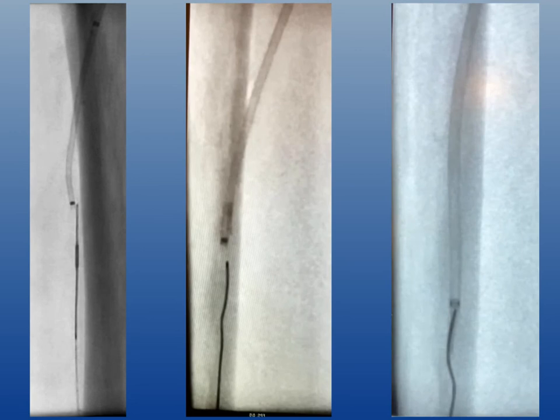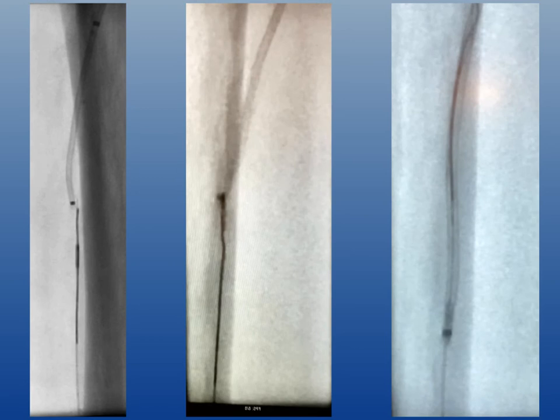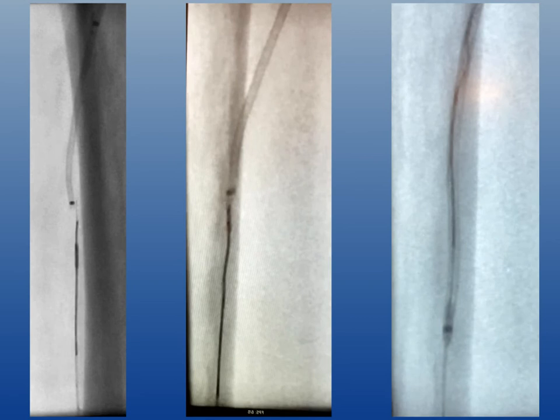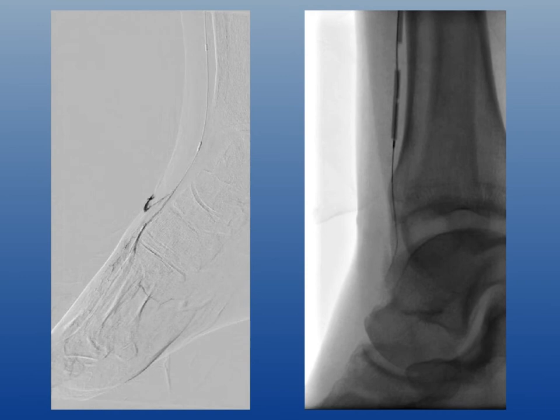Another technique is navi bossing using a four French Navi Cross catheter from Terumo. I was in two different subintimal planes from above and below, and used the Navi Cross catheter to disrupt the tissue between the two subintimal planes, which then allowed through-and-through access and let me advance my catheter and guide wire from below into the system from above.